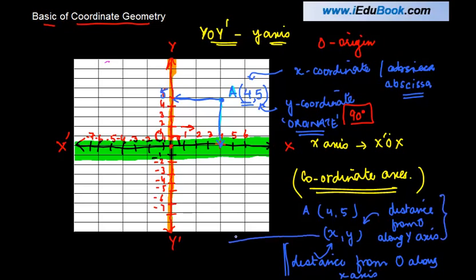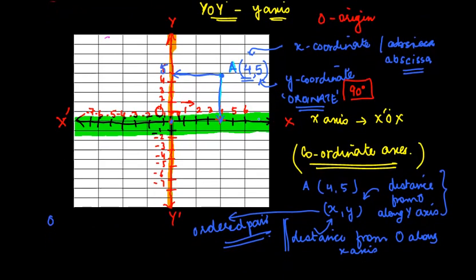At the origin, x is equal to 0 and y is equal to 0, hence we say that the ordered pair of origin is (0, 0).